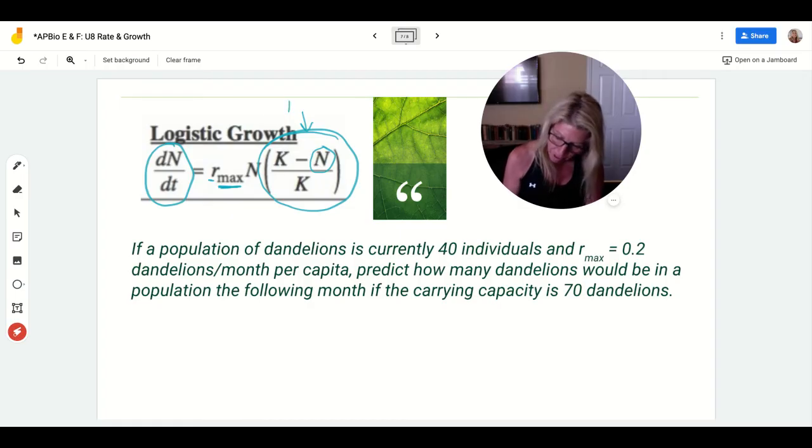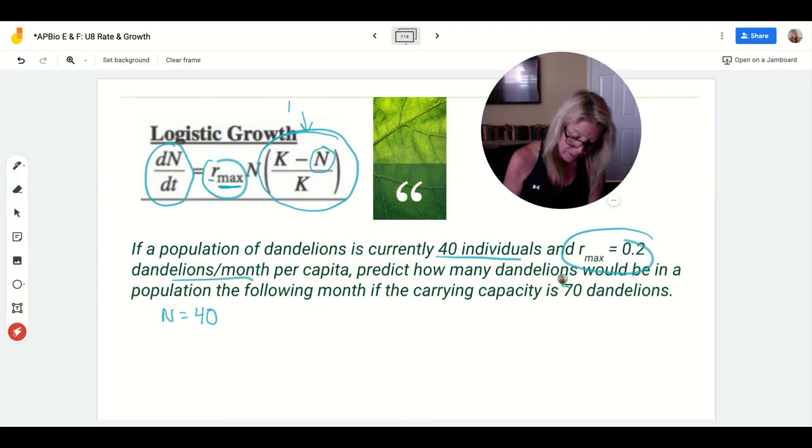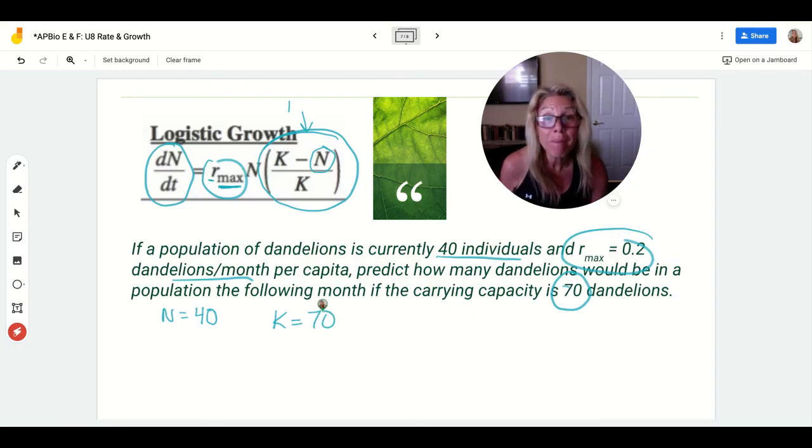Try this one. If a population of dandelions is currently at 40 individuals, that means N equals 40, and my r max is 0.2, so that's giving you this value. Predict how many dandelions would be in the population the following month, because they gave it to you per month, if the carrying capacity is 70. That means that K equals 70. You do the math and just pause me for a quick minute.